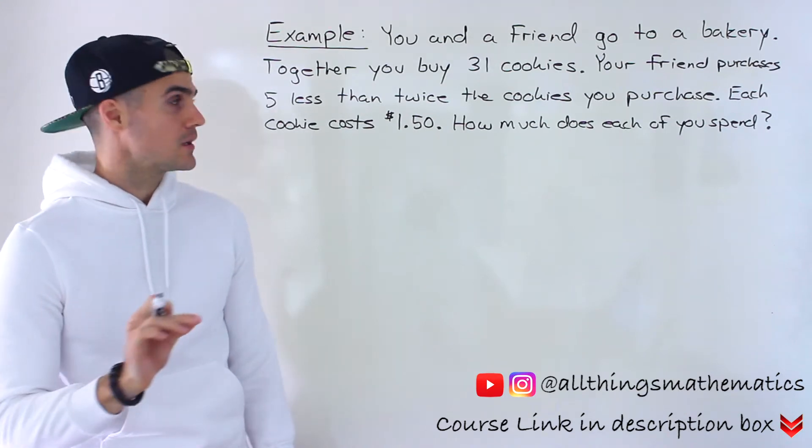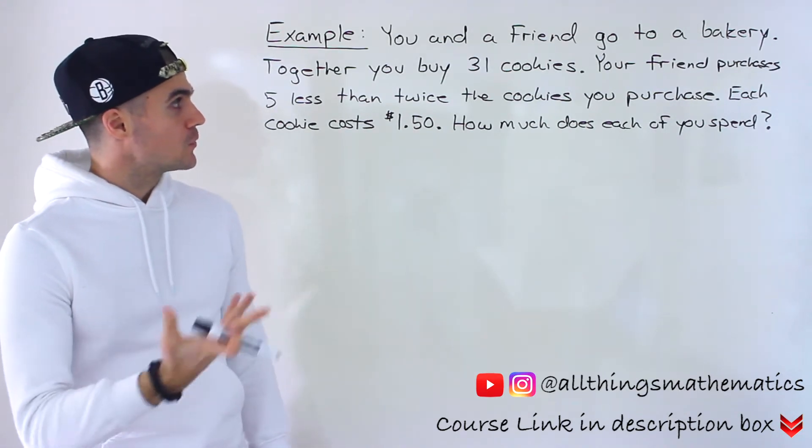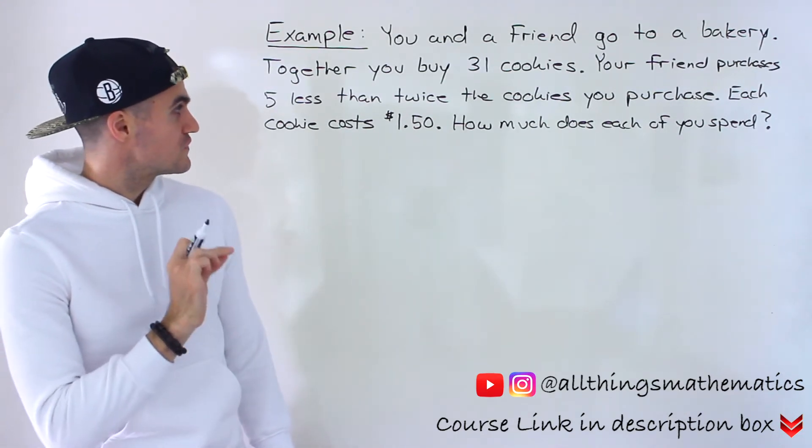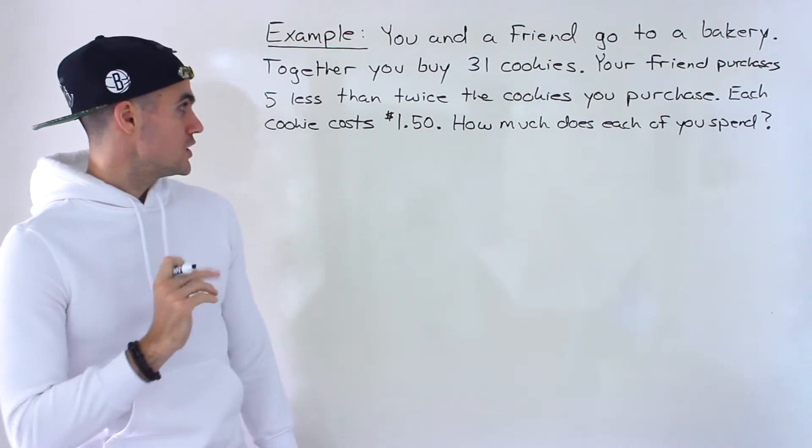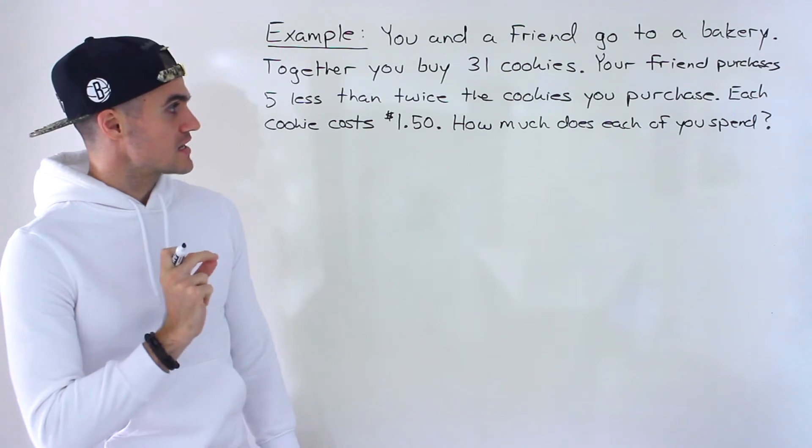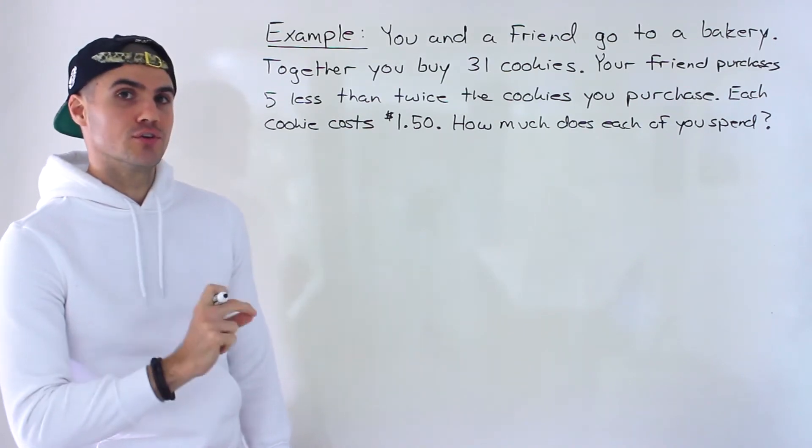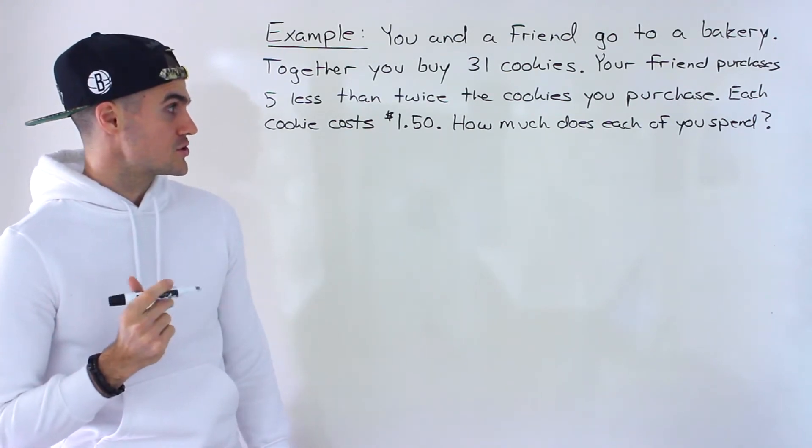So you and a friend go to a bakery and together you buy 31 cookies. Your friend purchases five less than twice the amount of cookies that you purchase. Each cookie costs $1.50. How much does each of you spend on your purchases?